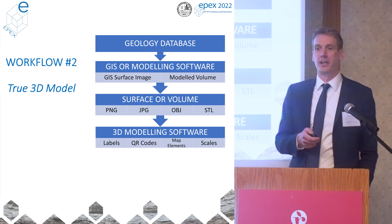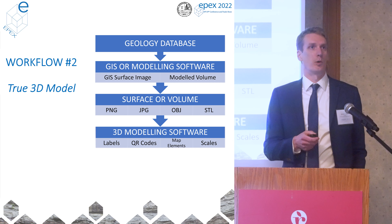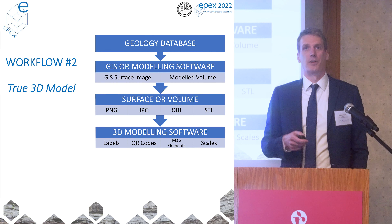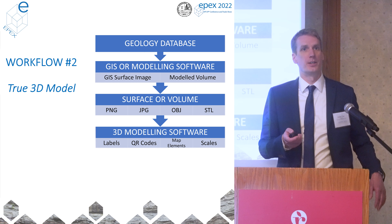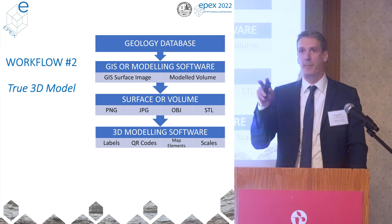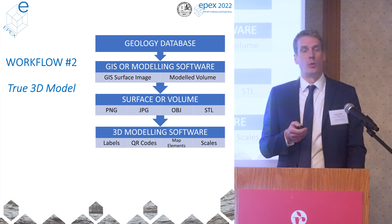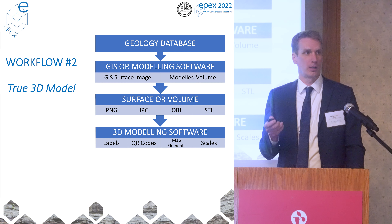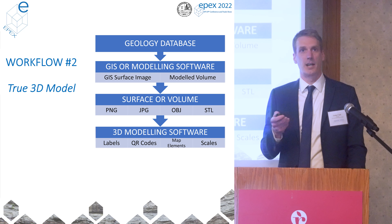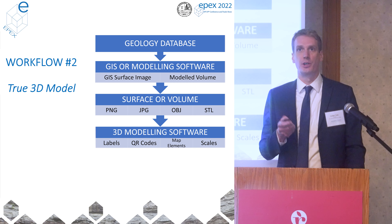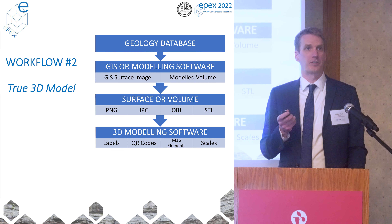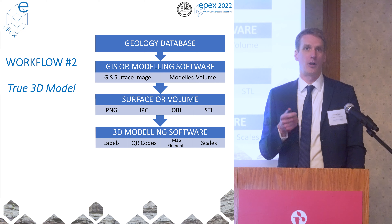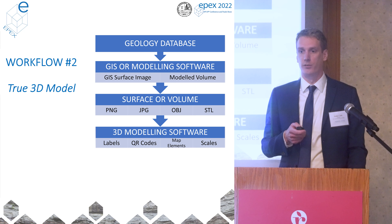For something a little bit more complicated — similar to what we did for the four-layer model — we start with our geology database. We make sure that we've done some QA/QC to ensure the data is high quality and we're mapping what we think we're actually mapping. We use GIS or modeling software; in the case of the four-layer model, we used LeapFrog, but you could use ArcGIS, QGIS, or whatever you're using. The output can be a surface image or a modeled volume. LeapFrog, when we made the four-layer model, already produced a three-dimensional volume.